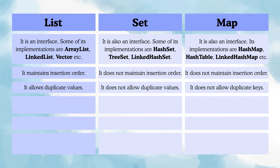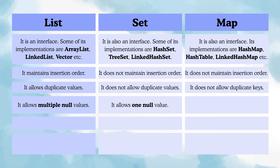Coming to the next point: list allows multiple null values. But most implementations of set allow only one null value. And most implementations of map allow only one null key, but multiple null values.